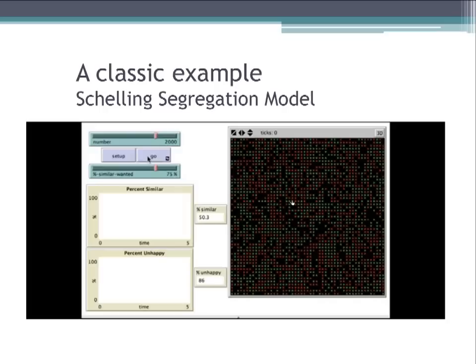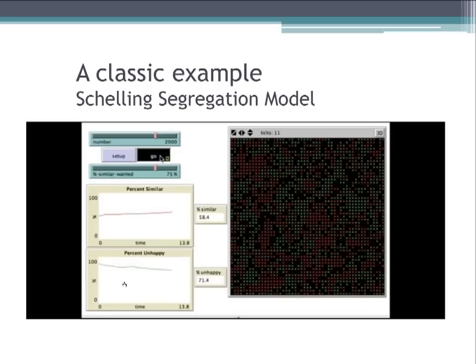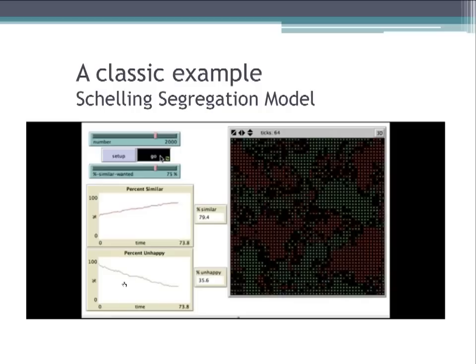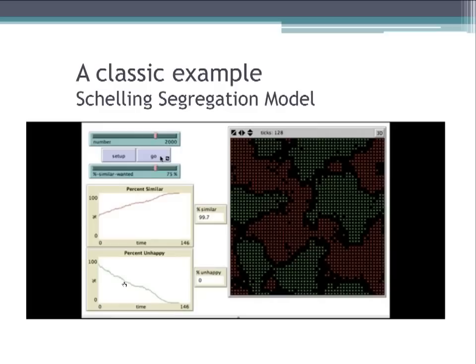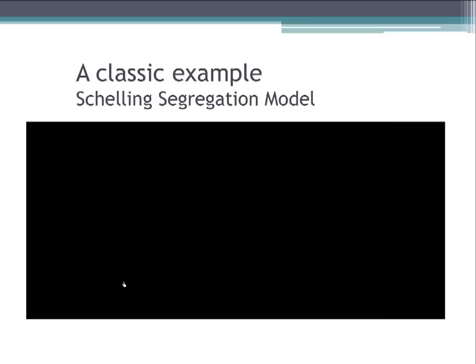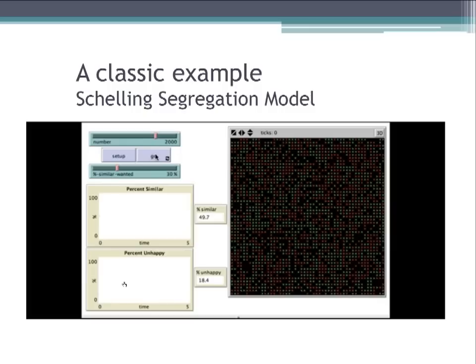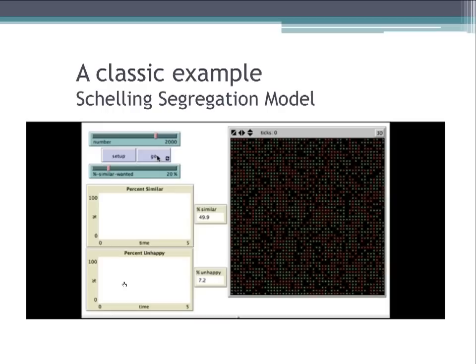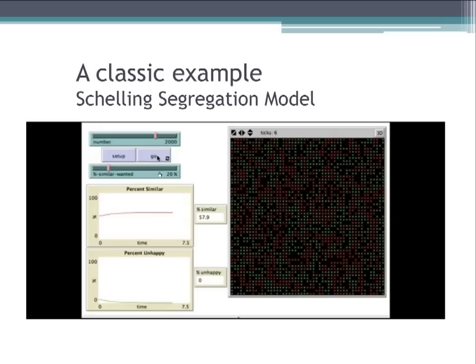Running the experiment with percent similarity wanted at 75% — meaning six out of eight neighbors must look like me — we see large patches of red and green neighborhoods forming with little intermixing. Running the same experiment at 50%, 40%, 30%, and 20%, we find that somewhere between 20 and 30%, it just takes 30% — the desire to have 30% of neighbors look like me — for distinct, segregated neighborhoods to appear.